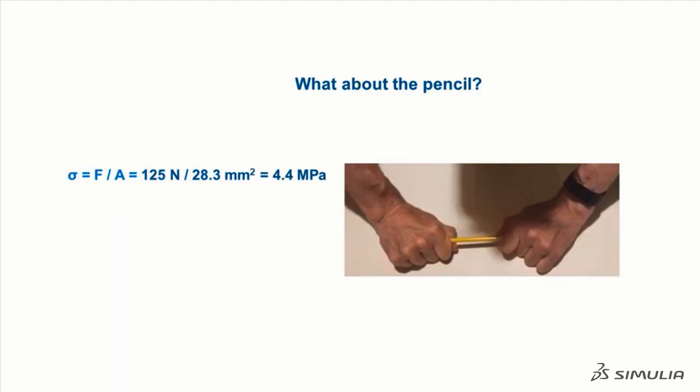What about the pencil? We know that we applied at least 51 N of force to the pencil, and likely we applied 2 or 3 times that amount. So let's assume 125 N of force was applied. Then we can calculate that the stress in the pencil was 4.4 MPa.